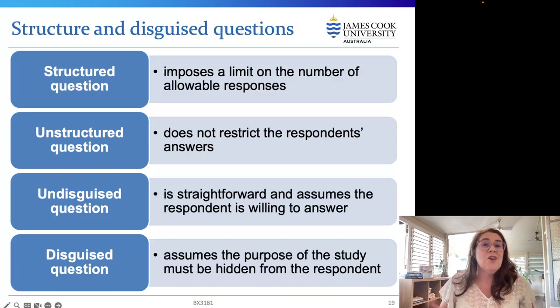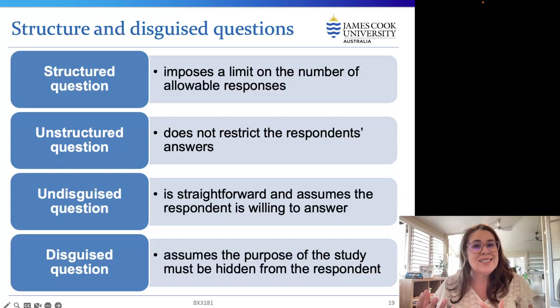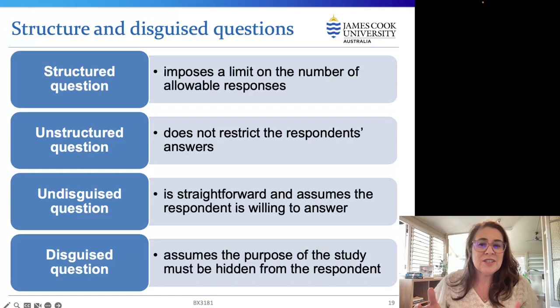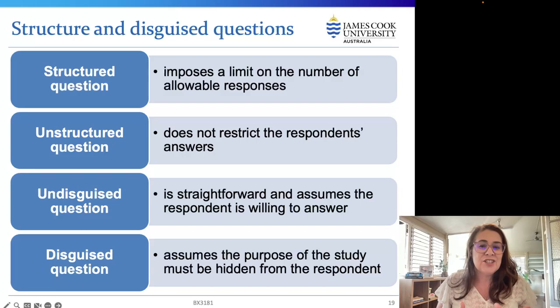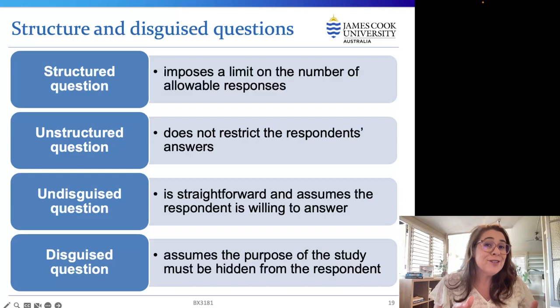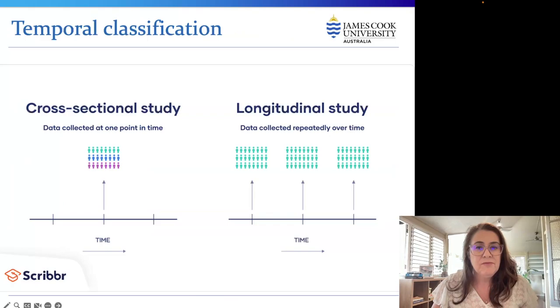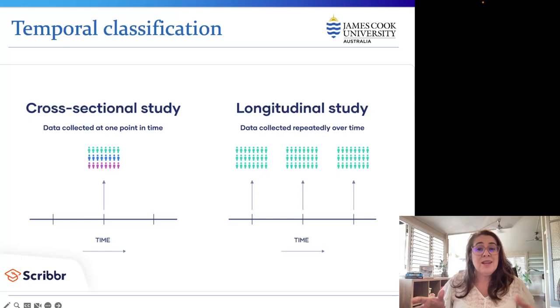Structured questions limit the number of responses available, whereas unstructured questions tend to be open-ended, allowing the respondent considerable freedom. The researcher can also disguise questions, which is particularly advisable if the subject matter is of a threatening nature. Questions can be categorized according to their degree of structure and disguise, though most surveys are a hybrid of structured and unstructured questions. Most surveys are conducted only once over a short period of time, but others require multiple surveys over a long period — a temporal classification.